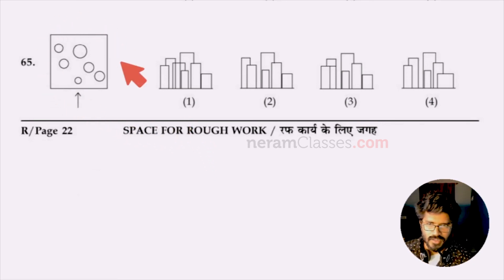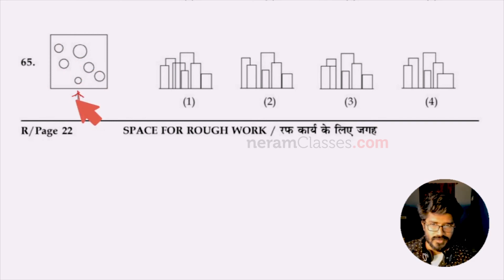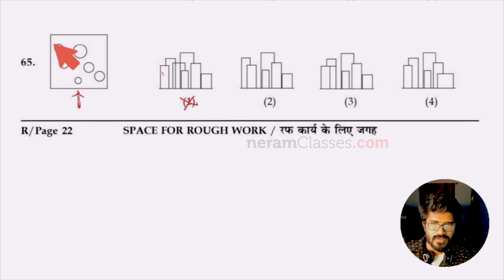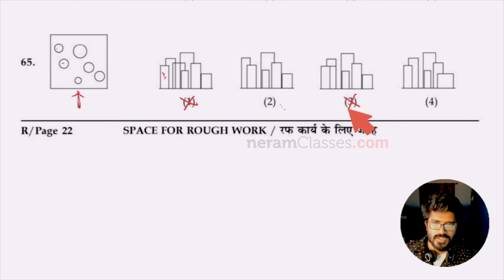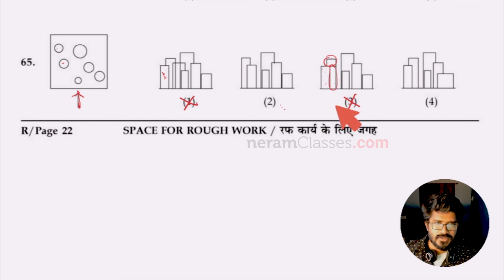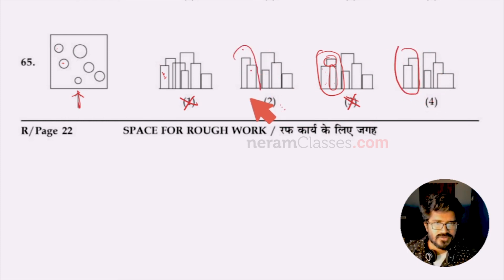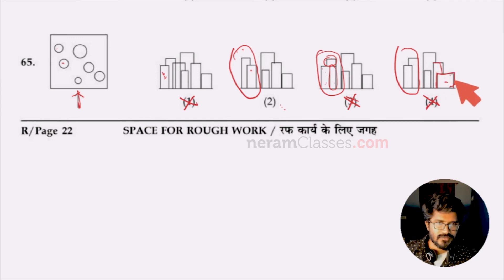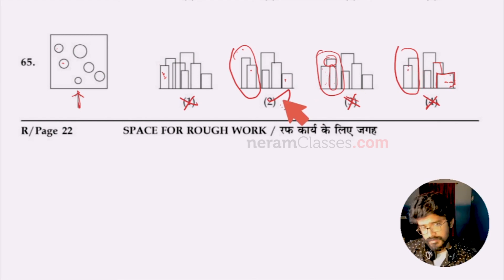Question 65: find the correct elevation for the 3D composition based on the arrow direction. Option one is wrong because the circle that should be in front appears at the back. Option three is wrong due to impossible geometry. Comparing two and four: option four's larger circle is too big compared to the reference. Option two is the right answer.